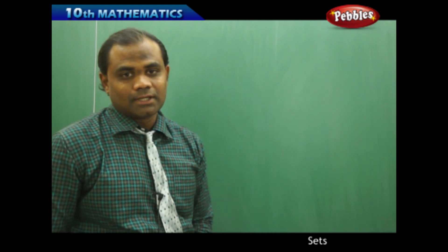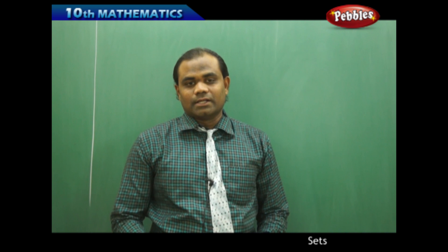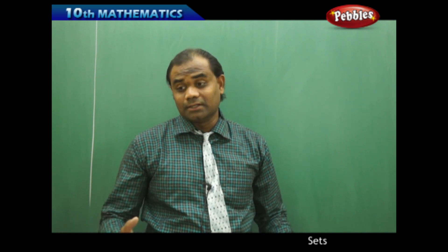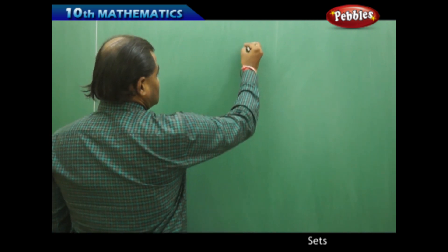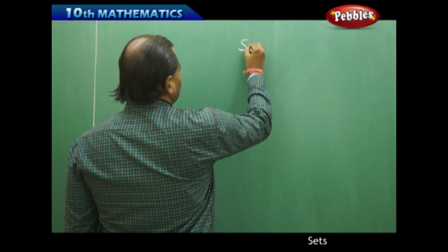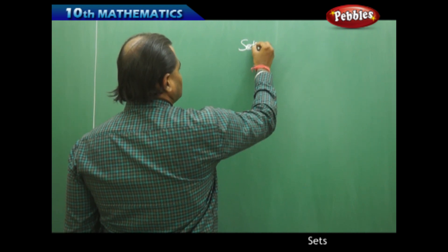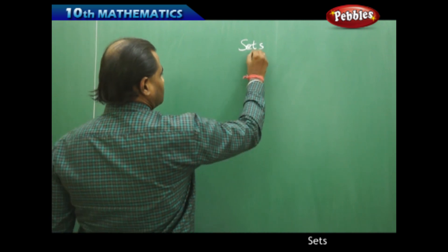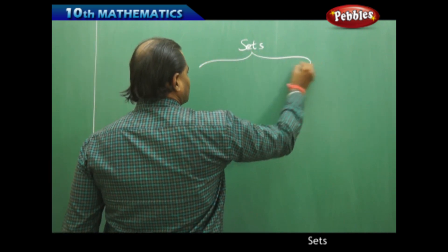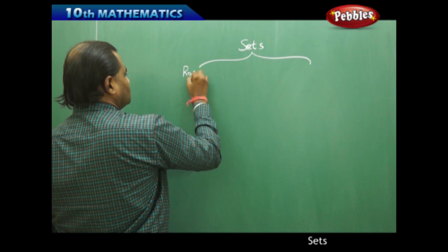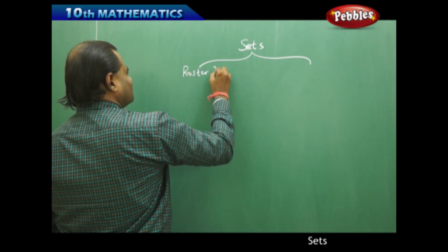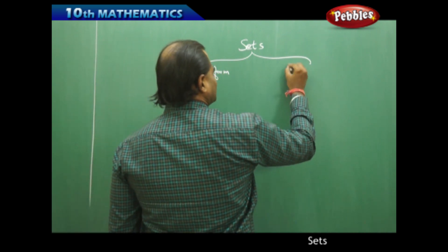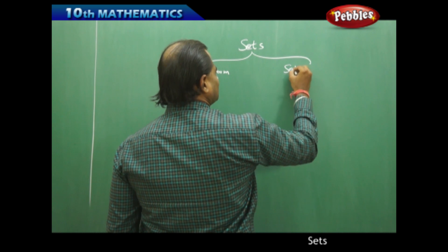Now continuing with notations, there are two ways of representing sets. One is the roster form and the other is the set builder form. When I have sets, I can represent them in two different forms depending on the problem — one being referred to as the roster form and the other as the set builder form.